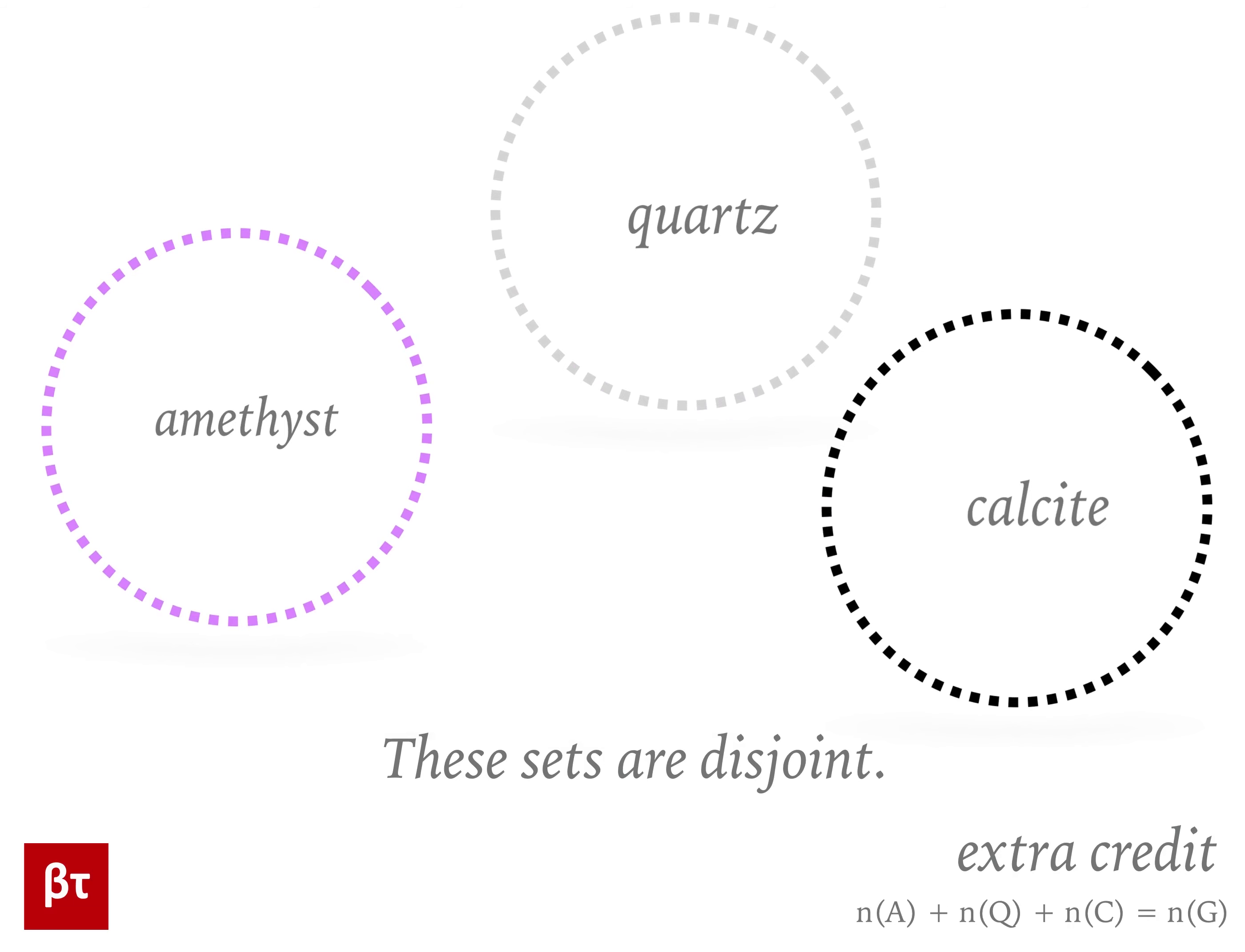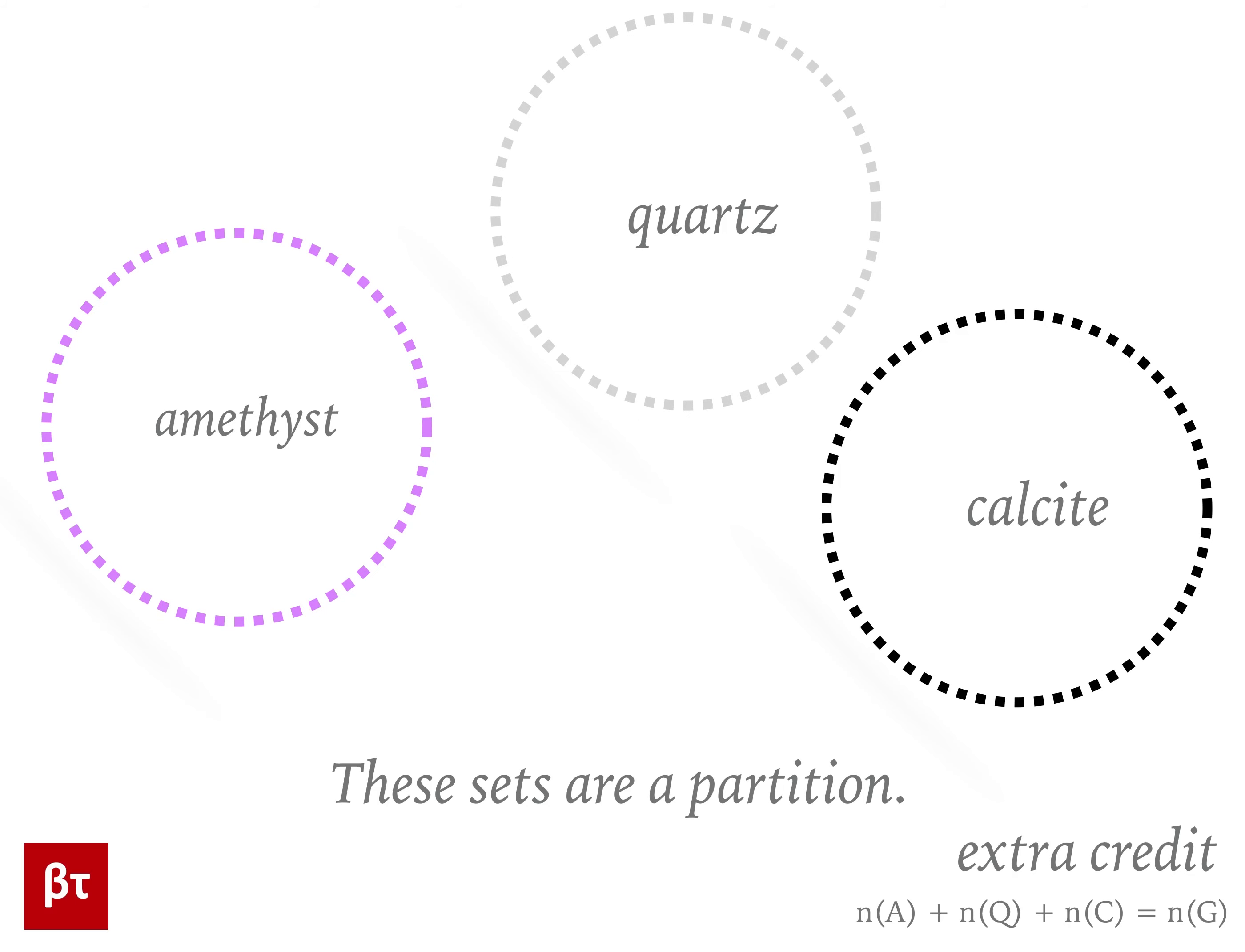Second, we are told that there are no other kinds of geodes that they sell. For these two reasons, the fact that the sets are disjoint, and the fact that these subsets make up the whole set G, we can call the set A, Q, C a partition of G. The number of elements in a partition set is always the sum of the number of elements in each of the subsets of the partition combined.